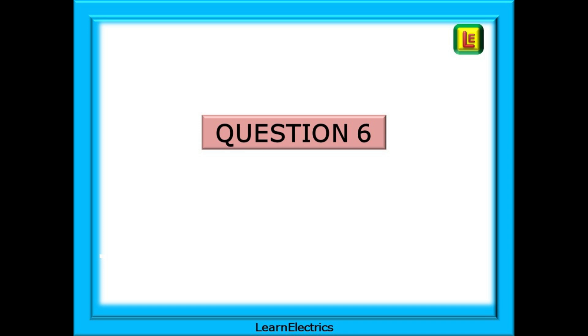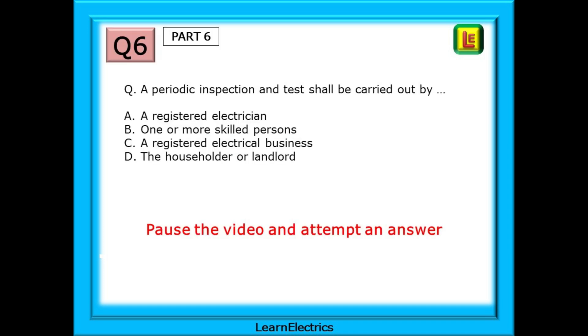On to question 6 now. We are asked the question. A periodic inspection and test shall be carried out by. And there are four possible answers. Only one answer matches the regs book. Pause the video.